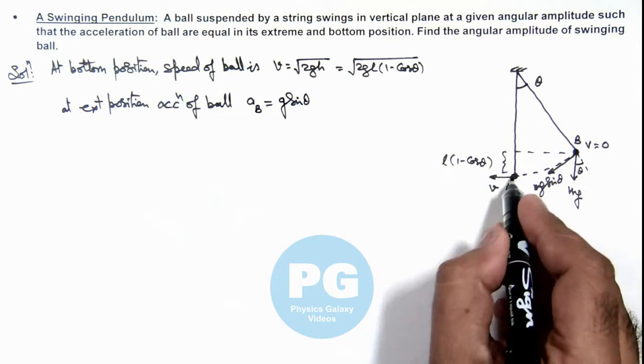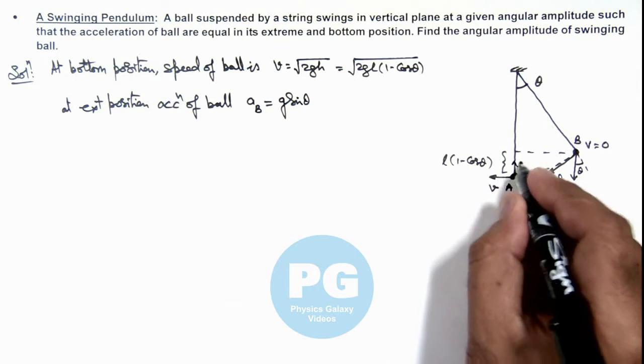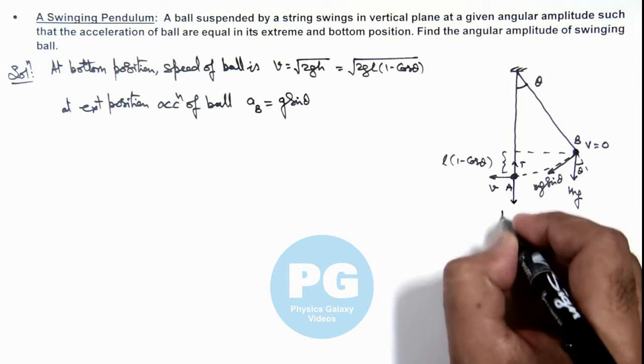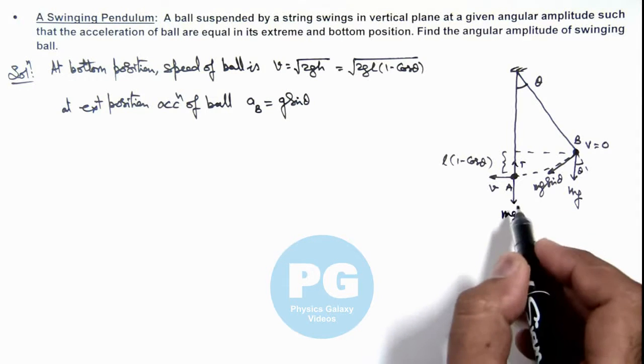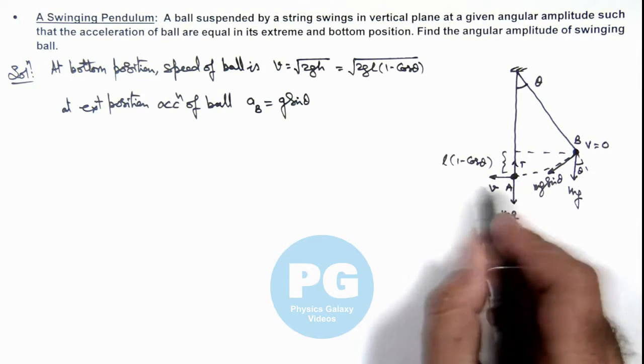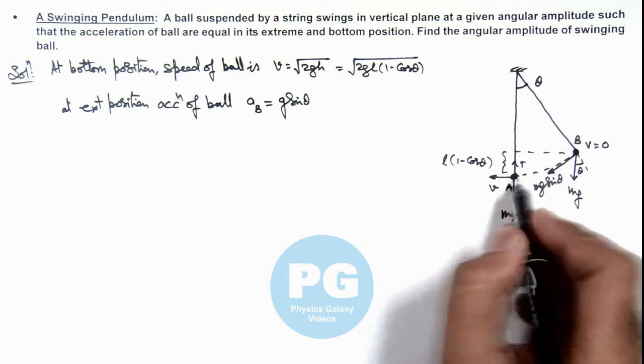And at the bottommost point, as tension is acting in vertical direction, mg is also acting in vertical direction, so no force is acting in tangential direction, so only normal acceleration it'll be having.